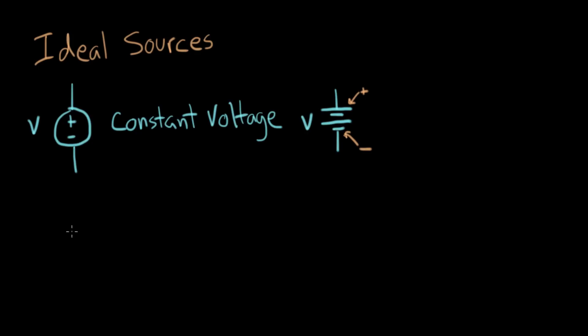The other type of ideal source is called the current source. It also has a symbol with a circle. This one has an arrow that goes in the direction of the current.